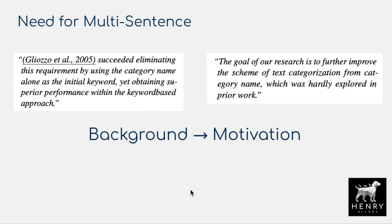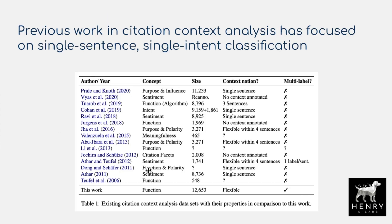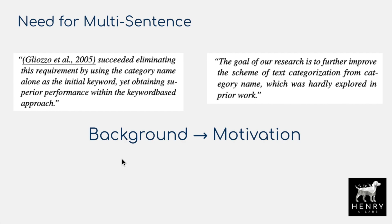Here's an example where including multiple sentences and having longer context helps infer the label. 'Galozo et al. succeeded in eliminating this requirement by using the category name alone as the initial keyword, yet obtaining superior performance within the keyword-based approach.' This looks like background. Then: 'The goal of our research is to further improve the scheme of text categorization from category name, which is hardly explored in prior work.' This is motivation. Background is like a historical timeline, while motivation addresses what problem is being solved.